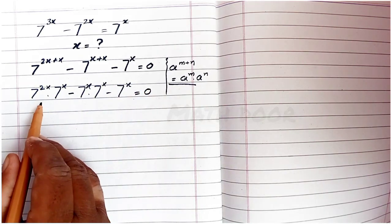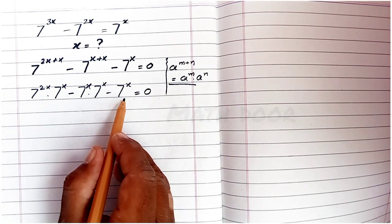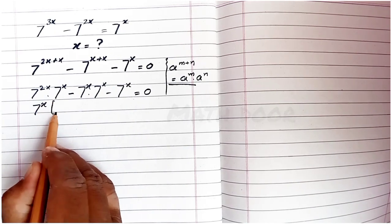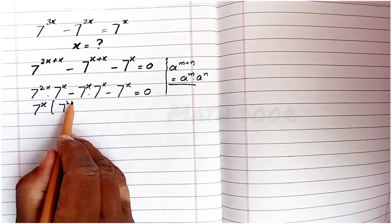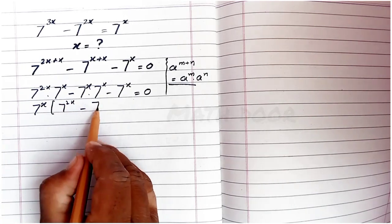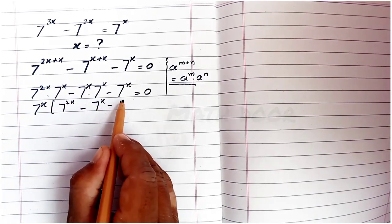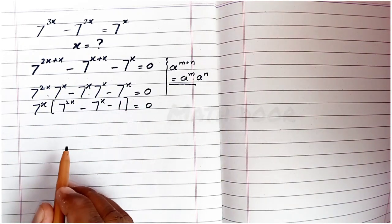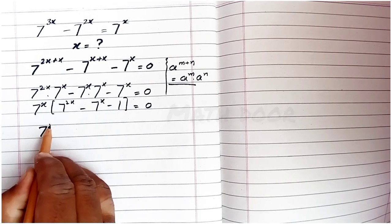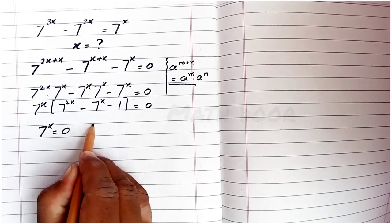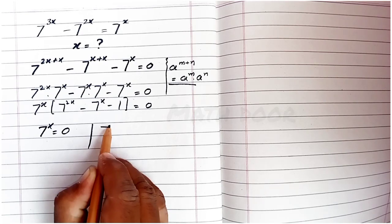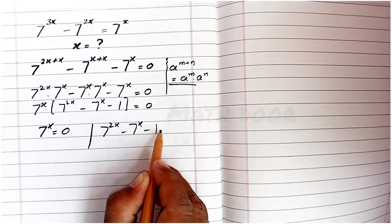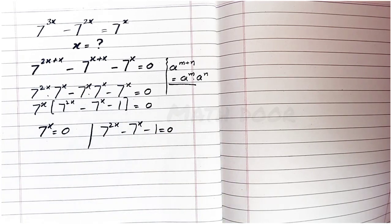From these three terms we factor out the common 7 power x, which gives: 7 power x times (7 power 2x minus 7 power x minus 1) is equal to 0. From here we set 7 power x equal to 0, and 7 power 2x minus 7 power x minus 1 equal to 0.